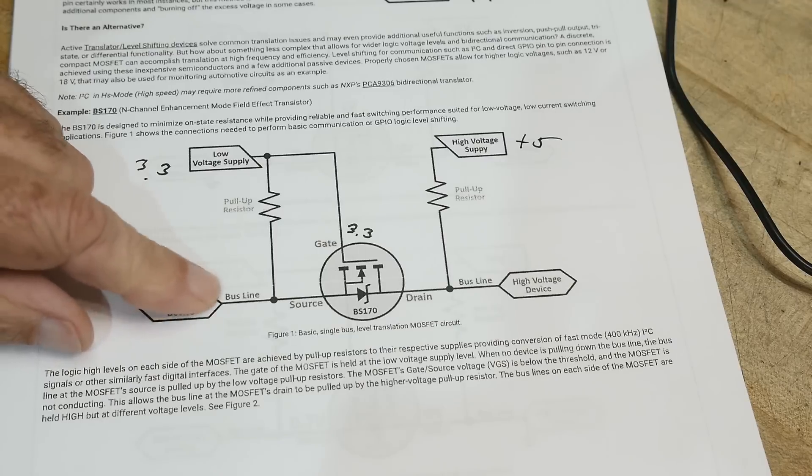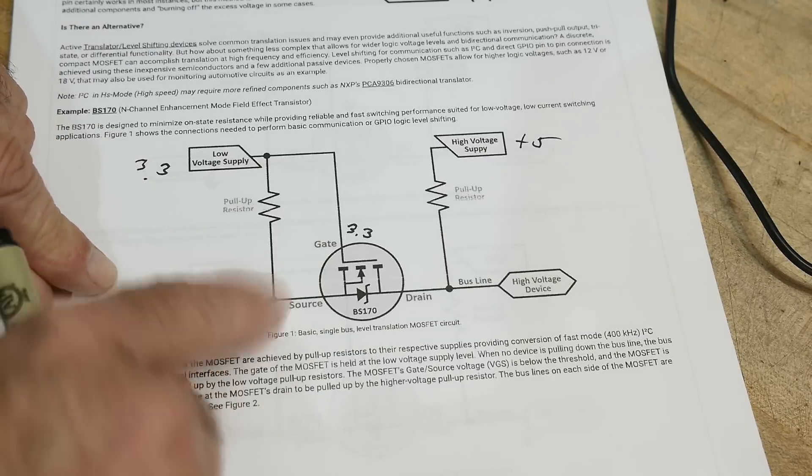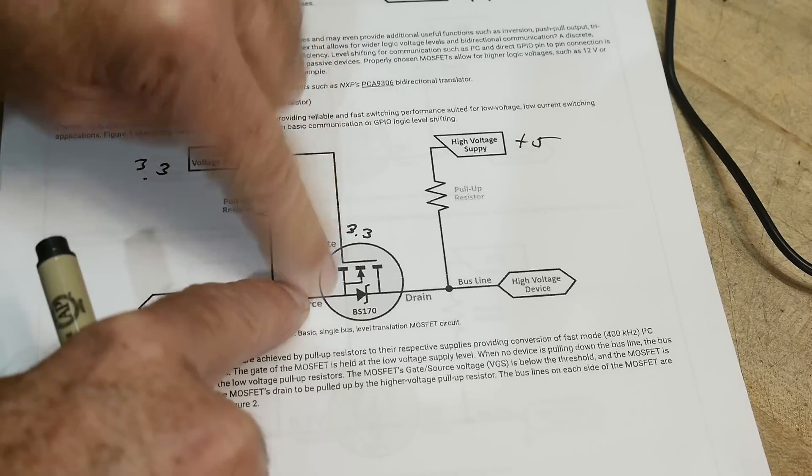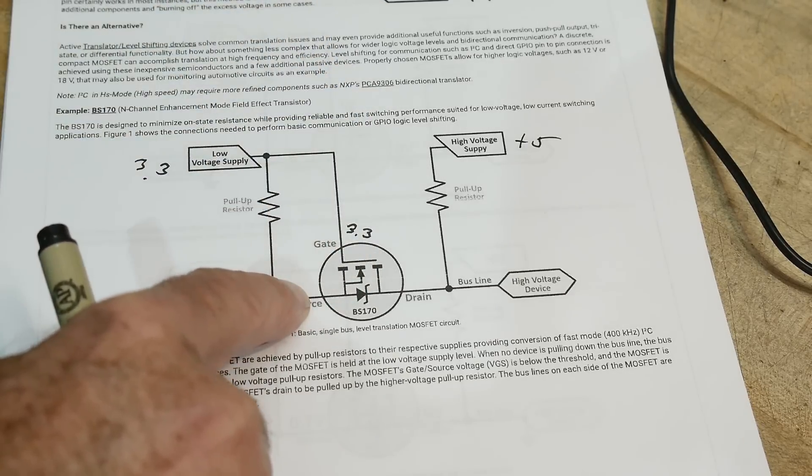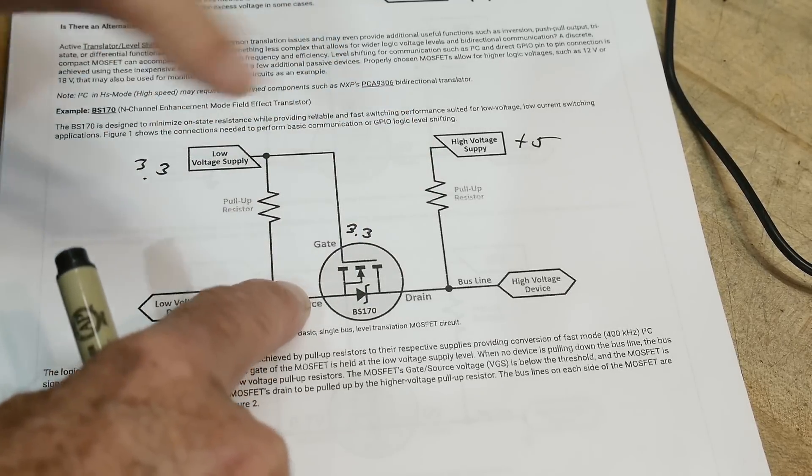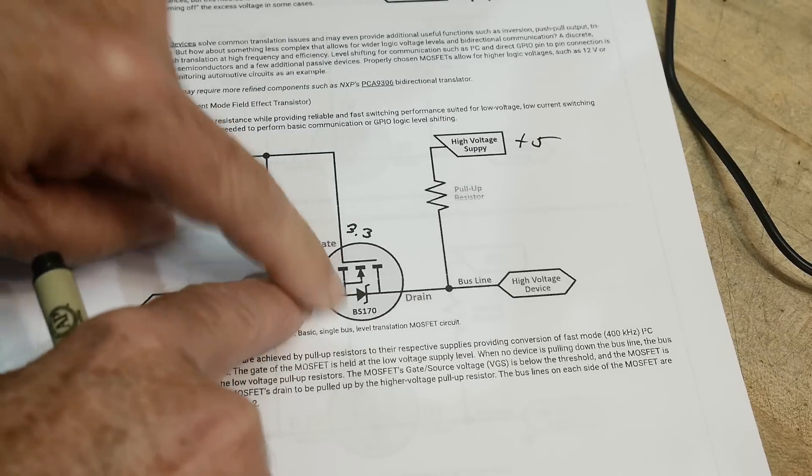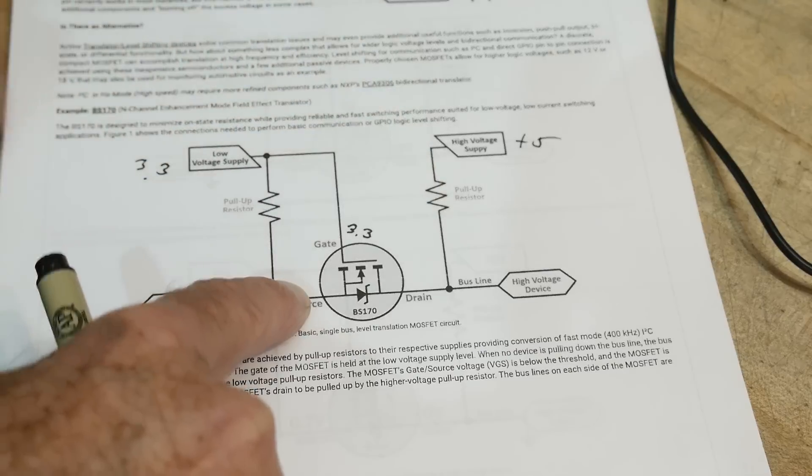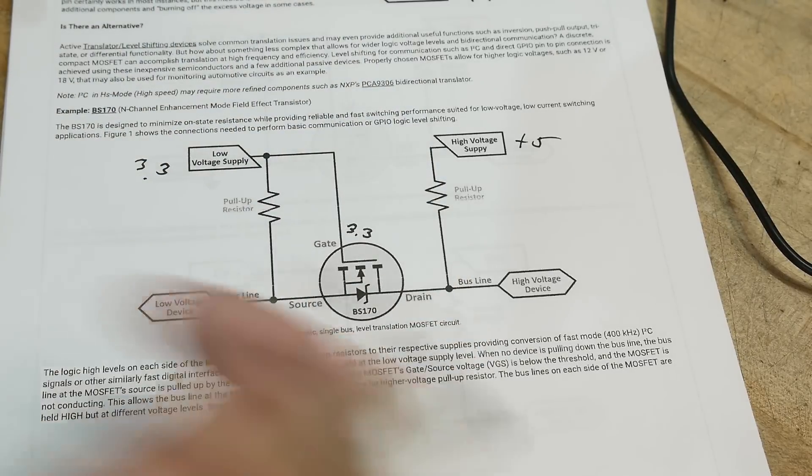What if this is low? If we have low here, we have 0 volts here. Now we have 3.3 and 0. We have 3 volts across the FET. It'll turn on. And so this low here will go through this 5 ohm resistor and pull this side low. So everything works in this direction.